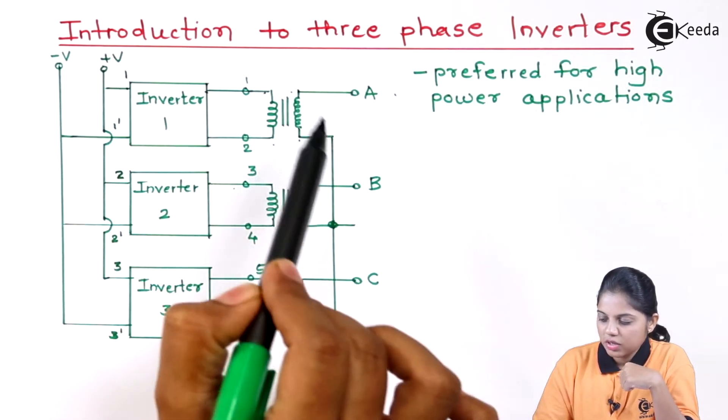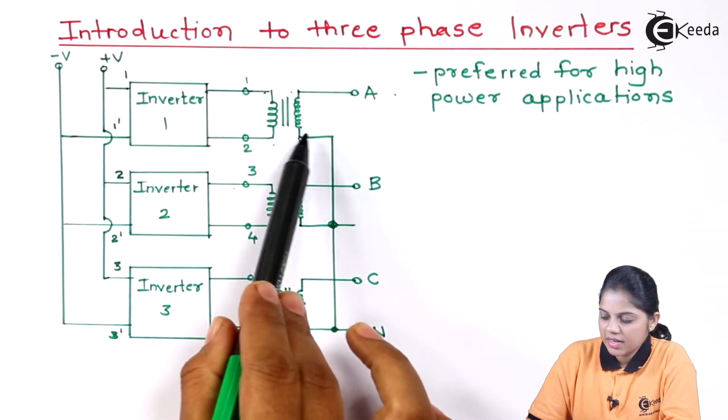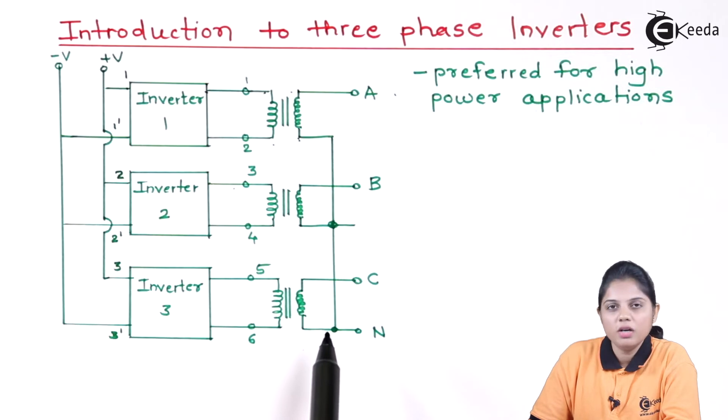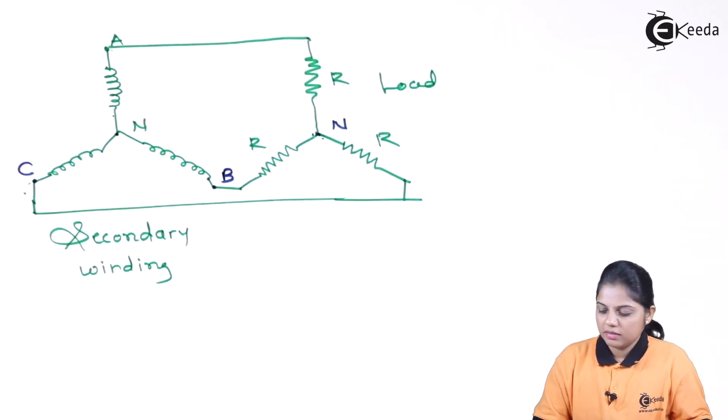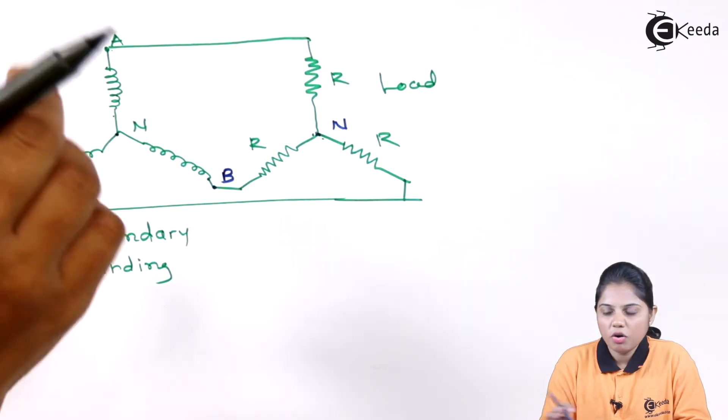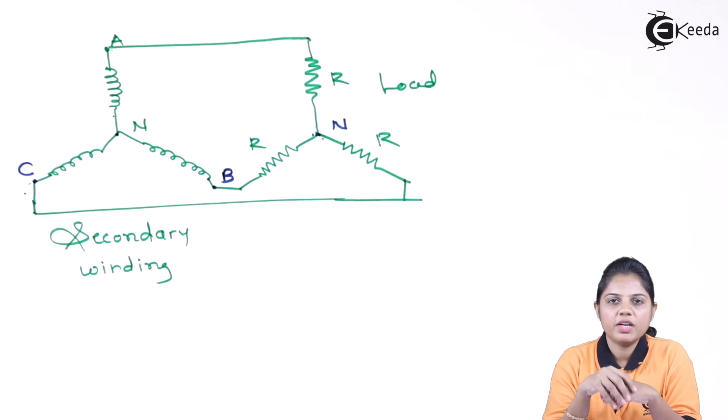But the output terminals A, B, C are connected with each other, and their secondary winding, a second terminal is connected to the neutral. So at the end, it will look like this. Now depending on this particular understanding, we are going to see the actual configuration where diode and thyristors are connected.